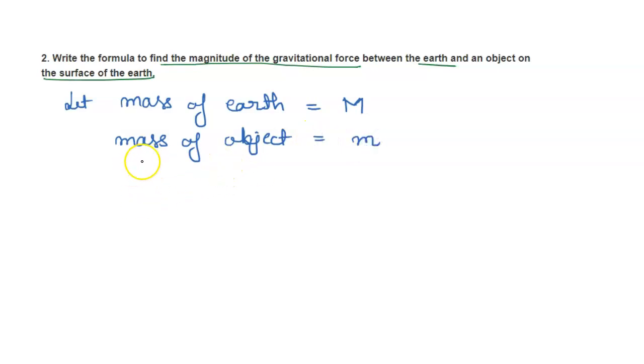Now we know that the universal gravitational constant is represented by capital G.